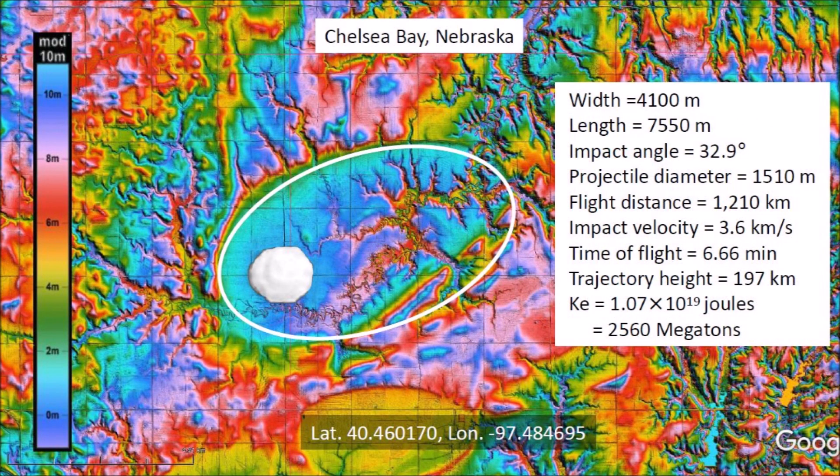Every time I calculate the energy of the impacts that made the Carolina Bays or the Nebraska Rainwater Basins, my mind struggles to comprehend the violence and carnage delivered by the secondary impacts of the ejecta of the extraterrestrial impact. You simply cannot outrun or hide from a chunk of ice with a diameter of 1.5 kilometers coming at you at 3.6 kilometers per second. Sometimes I think that the Carolina Bays and the Nebraska Rainwater Basins are the graves of our ancestors — but that is wrong. Our ancestors were very far away from here and they survived the Younger Dryas to give us life.